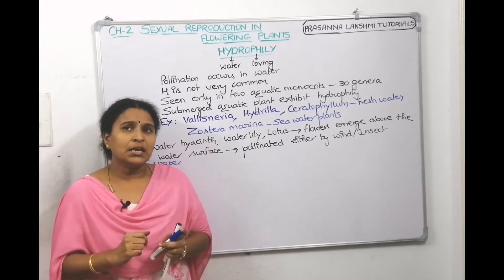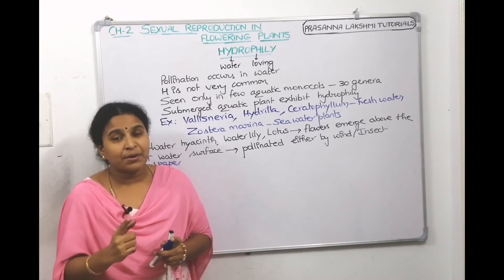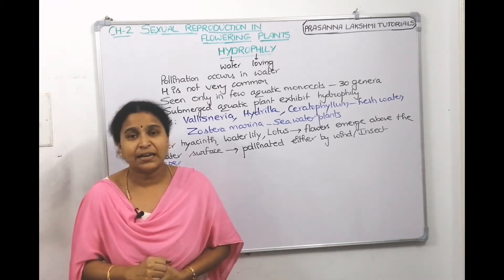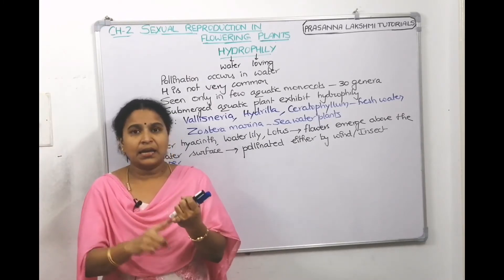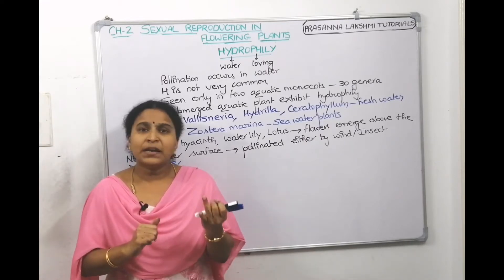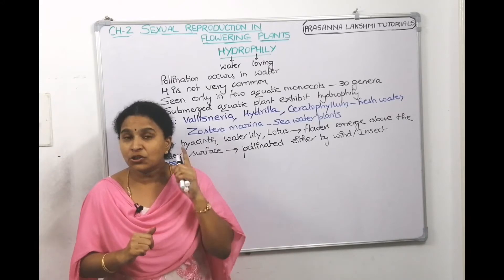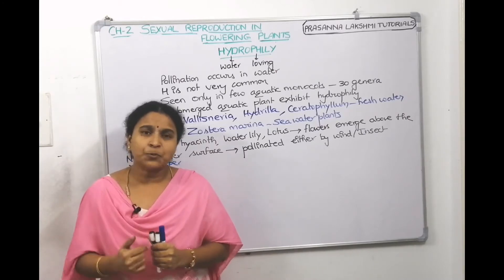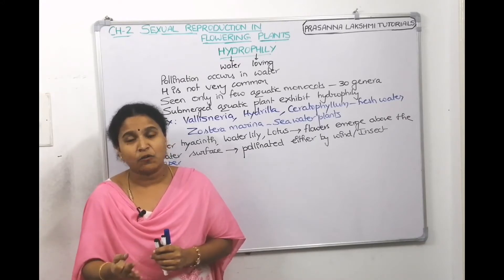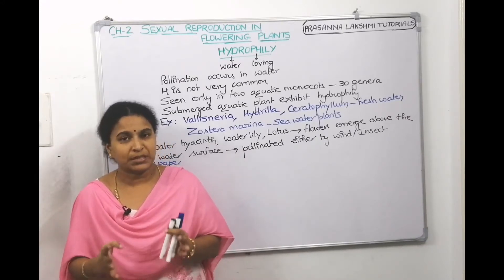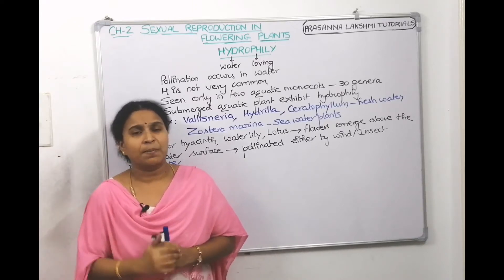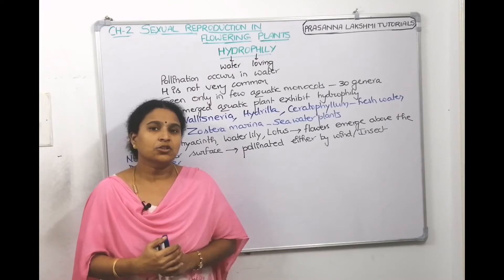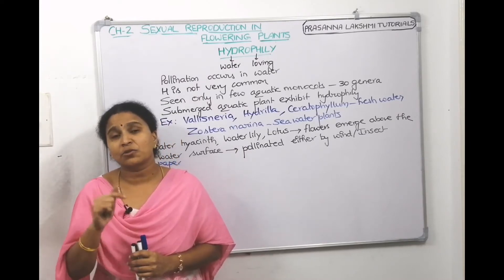Water is a medium for transfer of male gametes in primitive plants like algae, bryophytes, and pteridophytes. Recollect from the plant kingdom chapter — in algae, bryophytes, and pteridophytes, the male gametes swim in water, so water is required for the transport of male gametes. But when you come to advanced plants like gymnosperms and angiosperms, water is not the medium; they go with biotic pollination.